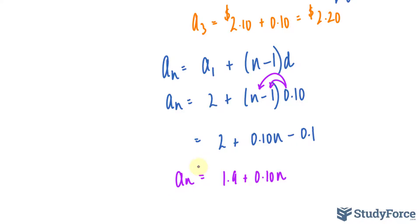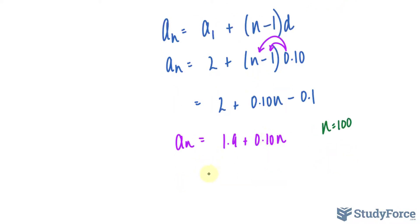This formula will tell us how much will be made at 100 subscriptions sold. If I substitute n is equal to 100 into here, I end up with 1.9 plus 0.10 times 100.